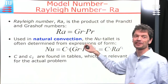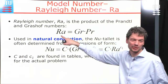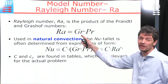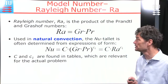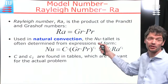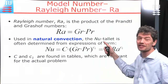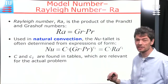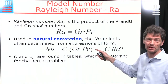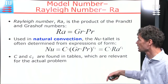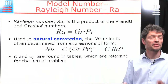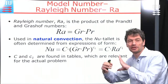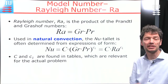From the Grashof number, we derive the Rayleigh number, which also characterizes natural convection. The Rayleigh number is the Grashof number multiplied by the Prandtl number. We then often see formulas giving the Nusselt number as a coefficient C multiplied by the Rayleigh number raised to an exponent C1. We need to find those coefficients from literature — authors have found them for many characteristic cases, and because everything is in dimensionless numbers, we can apply them even at different scales.